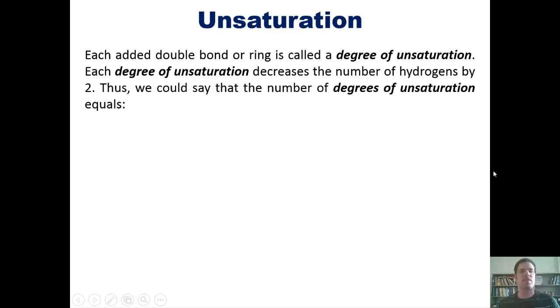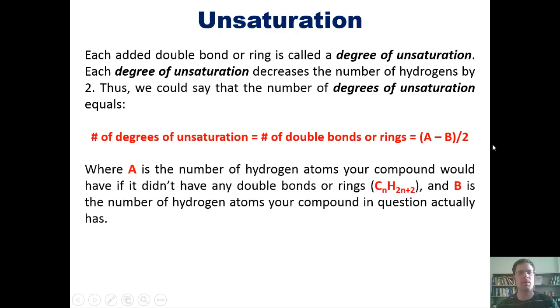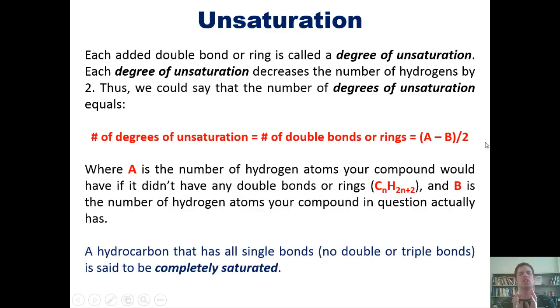Thus, we could say that the number of degrees of unsaturation, or number of double bonds or rings, is equal to A minus B divided by 2, where A is the number of hydrogen atoms that your compound would have if it didn't have any double bonds or rings, and B is the number of hydrogens that your compound in question actually does have. Now, just so you know, any hydrocarbon that has all single bonds in it, no double or triple bonds, is said to be completely saturated, as in the case of saturated fats. They're fats that contain no carbon-carbon double or triple bonds.